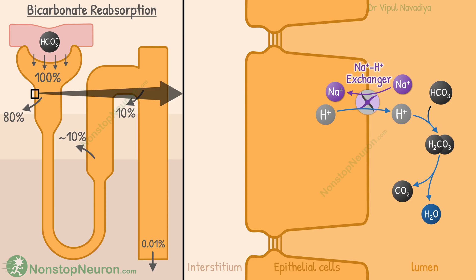This dissociation process is very slow, but there is an enzyme on the membrane called carbonic anhydrase 4. It catalyzes this reaction, hence making it fast. Now the CO2 moves through the cell membrane and enters the cell.